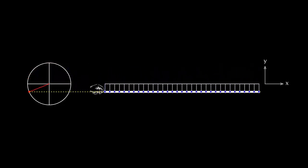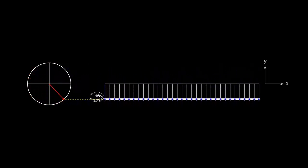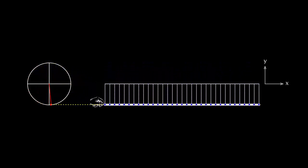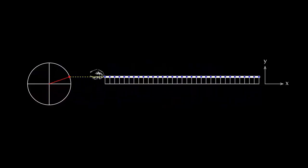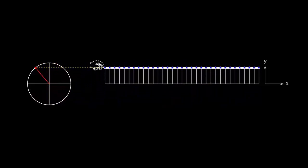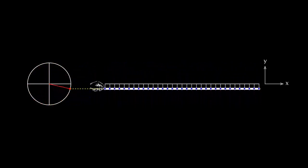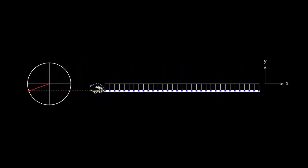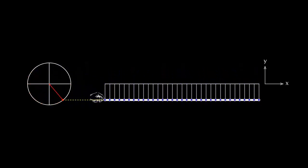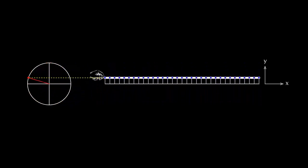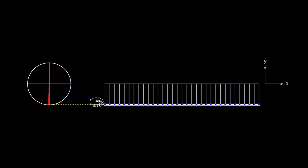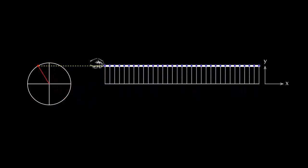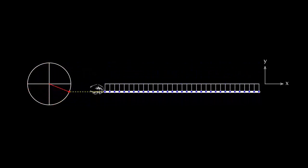Imagine all the elements of the rope beginning to vibrate at the same time as when the left end is vibrated. All of them would be in the same positions relative to their initial positions and the rope would always be straight. This would happen if the bonding between the neighboring elements is infinitely strong.